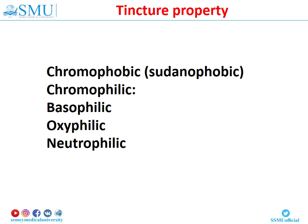Tincture property: the ability of histological structures to be stained by some dyes is called tincture property. Structures not reacting with dyes are called chromophobic. Stained structures are chromophilic. In some cases, the name of the dye is used to characterize tincture property – for example, pyroninophilic means stained by pyronin, and sudanophobic means not stained by Sudan. Structures stained by basic dyes are called basophilic. Structures stained by acidic dyes are called oxyphilic. Structures stained both by acid and basic dyes are called neutrophilic. Structures stained by salts of silver are called argyrophilic.